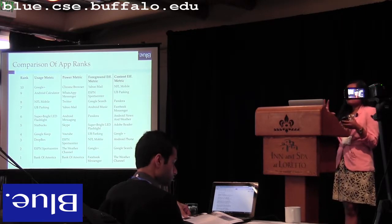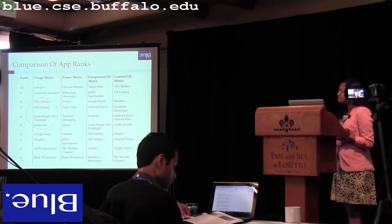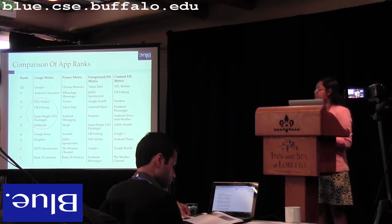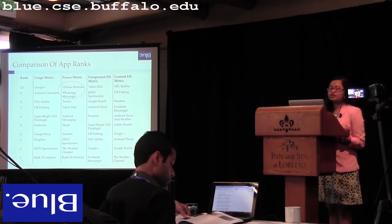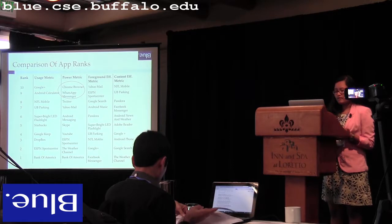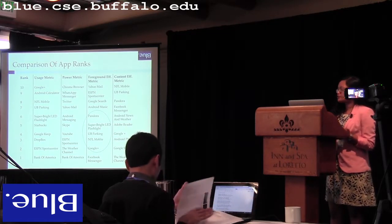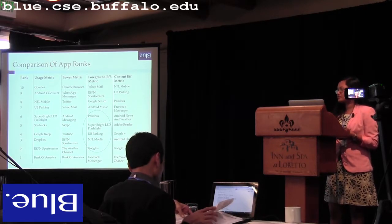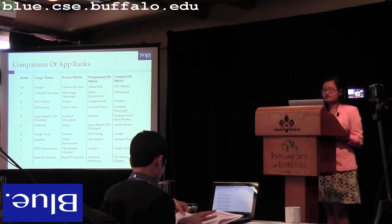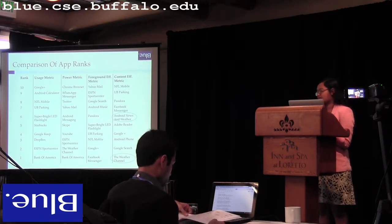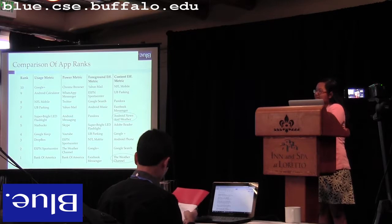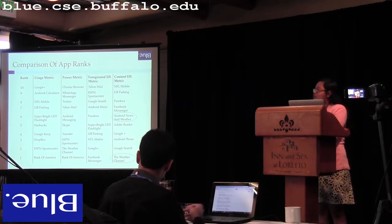Looking at the bottom ten apps: some apps consume energy fast but have consumed much less energy overall. Apps like Chrome Browser and WhatsApp Messenger, though they ranked in the top ten under usage-based metric consuming a lot of energy, consumed energy at a very low rate. Some other apps consumed energy at a faster rate and also didn't do well under the foreground efficiency metric. Under the content efficiency metric, it's interesting to note that better apps did very poorly - maybe because they don't necessarily provide dynamic information. They provide important but static information, so they don't create a lot of screen refreshes, and hence get undervalued in this metric.